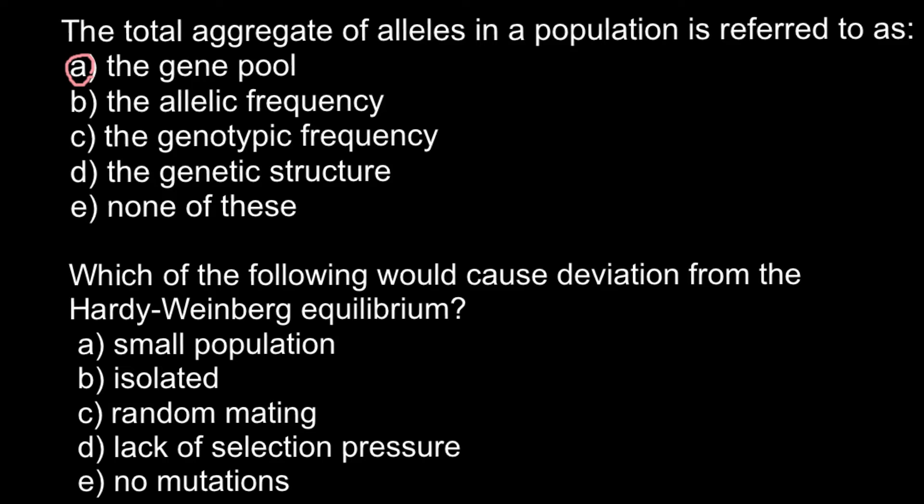The next question is: which of the following would cause deviation from the Hardy-Weinberg equilibrium? Once again, here are the five answers: A, small population; B, isolated population; C, random mating; D, lack of selection pressure; and E, no mutations.